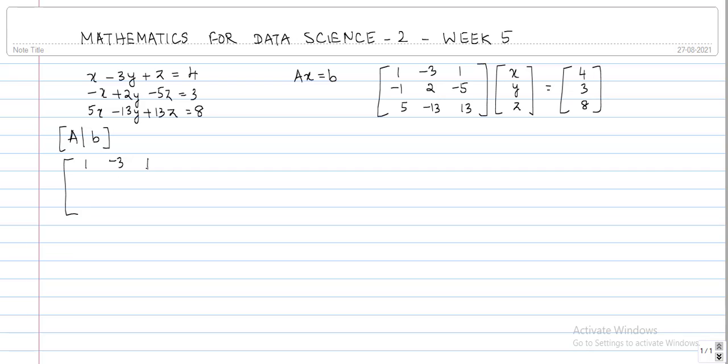So that is 1, minus 3, 1, minus 1, 2, minus 5, 5, minus 13, 13, along with the right-hand vector b, that is 4, 3, 8.